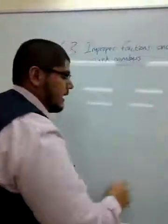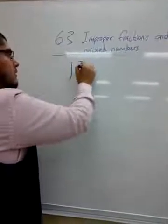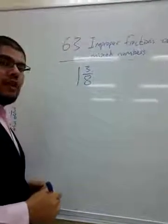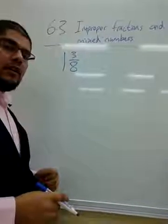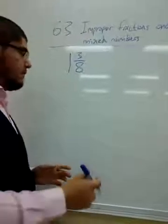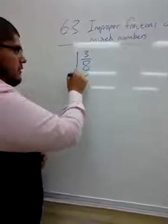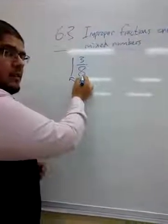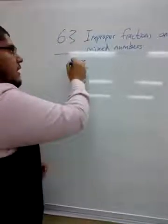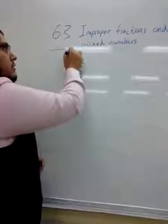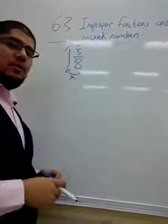Let's take our mixed number, such as 1 and 3 over 8. There's a quick trick you can use, such as multiply the denominator by the whole number, and then add the result to the numerator.